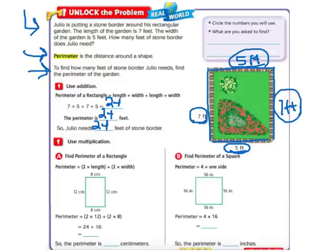Now there's another way to do it besides just this plus this plus this plus this. We can do 2 times the length, so 7 times 2, because there's 2 of them that are 7. And 2 times the width, so 5 times 2, since there's 2 5 feet.